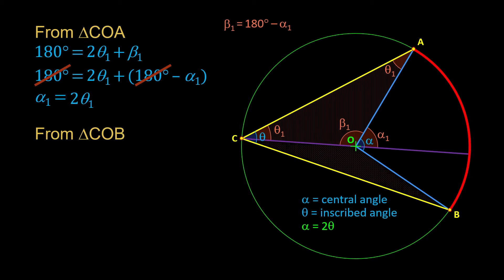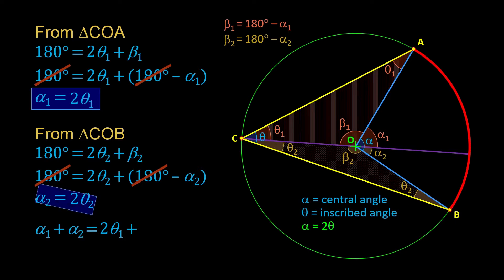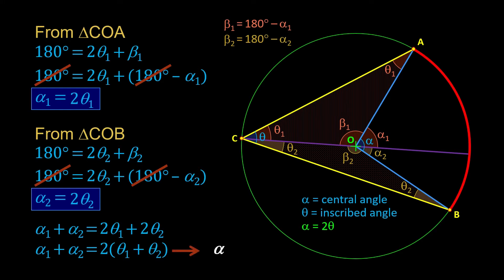From isosceles triangle COB, we have Alpha2, Beta2, and two equal angles called Theta2. So 2·Theta2 + Beta2 = 180°. Substituting Beta2 = 180° − Alpha2, canceling 180°, and transposing Alpha2 to the left gives Alpha2 = 2·Theta2. Now we have Alpha1 + Alpha2, and we can factor out 2 on the right side to get Theta1 + Theta2. From the figure, Alpha1 + Alpha2 = Alpha and Theta1 + Theta2 = Theta, so Alpha = 2·Theta. That is our theorem.